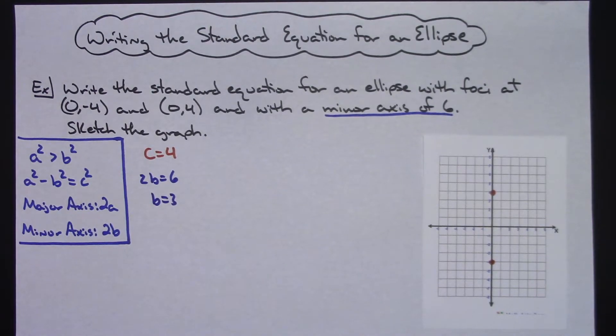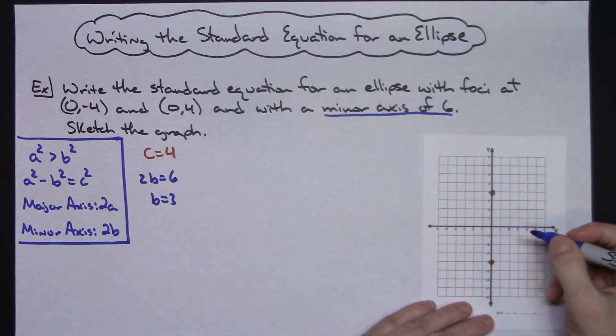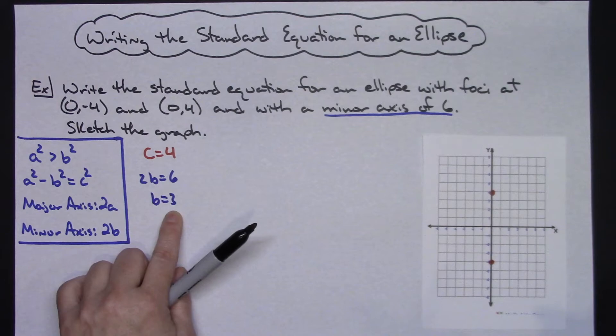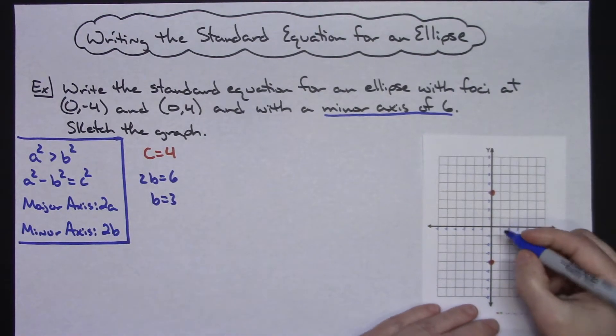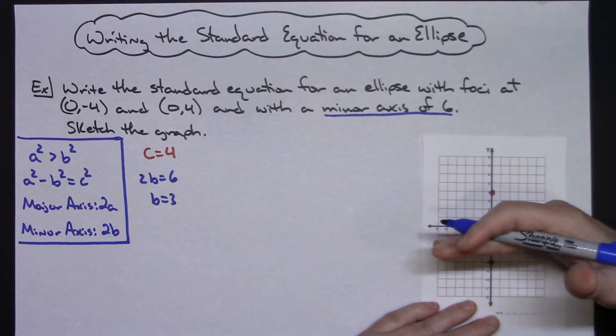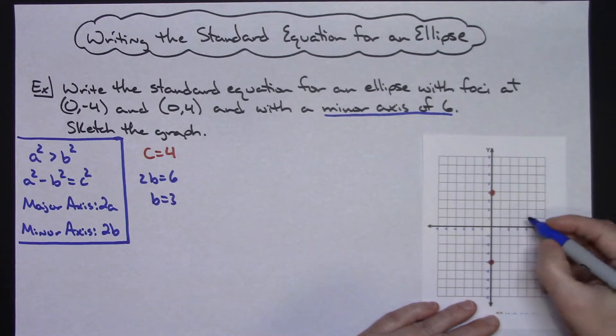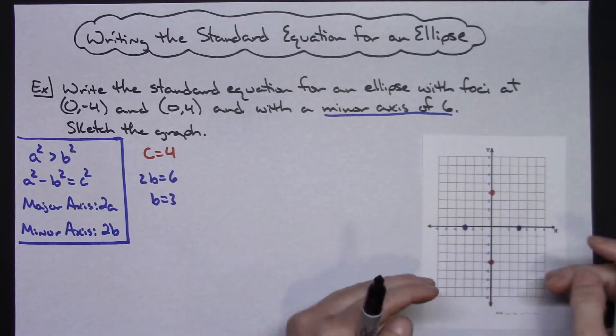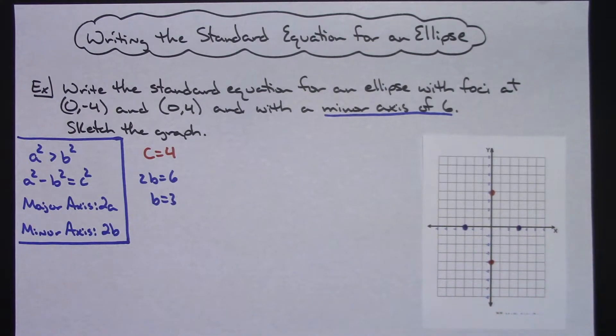So that's the length of the minor axis. It'll be in this case plus or minus 3, 0. Because my focus I know have to be on my major axis, that means my minor axis has to go this way. So I would have a dot at (3, 0) and (-3, 0). So there are my co-vertexes, the length right there of my minor axis.